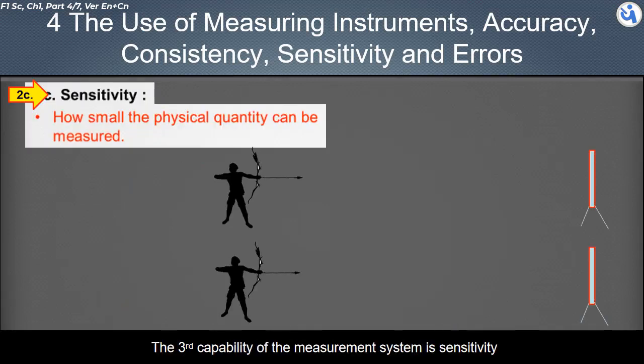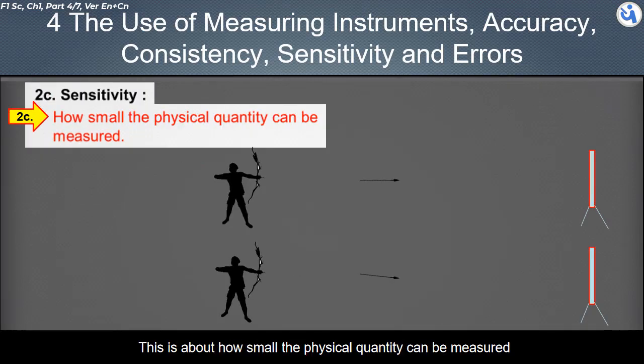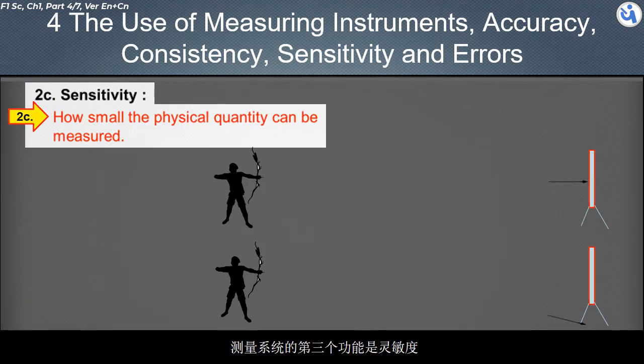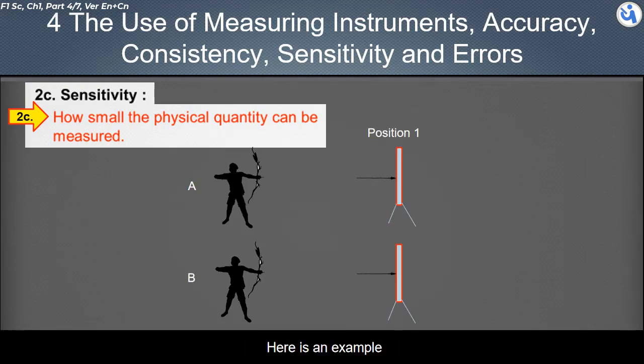The third capability of the measurement system is sensitivity. This is about how small the physical quantity can be measured.